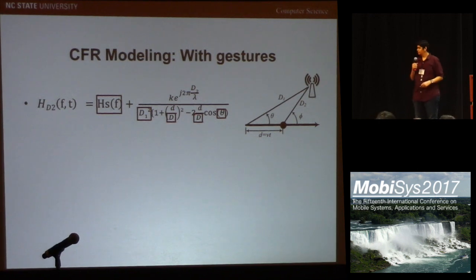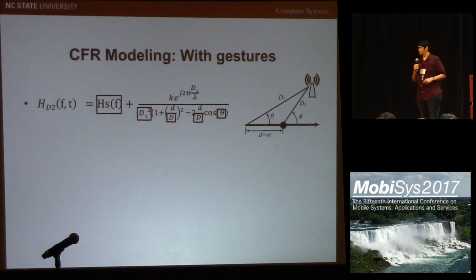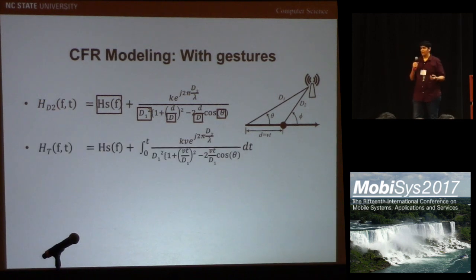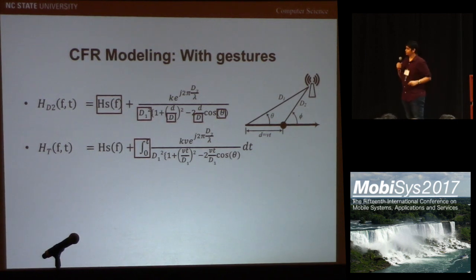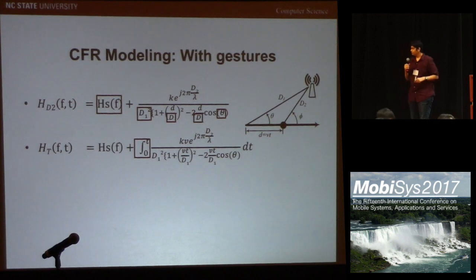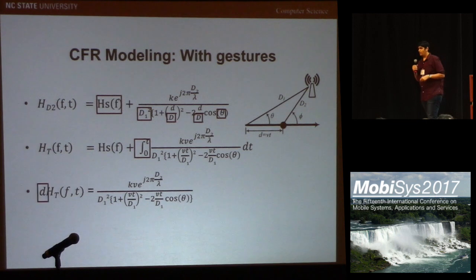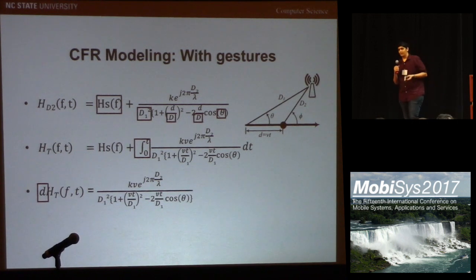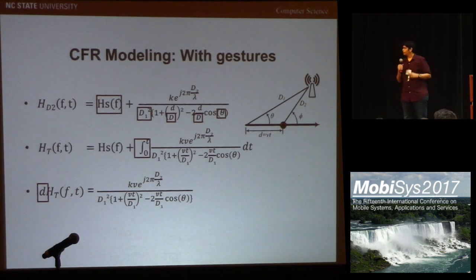We have expressed the equation only in terms of parameters D1 and D2. When we perform a gesture like raising the arm, we are actually exposing our arm as a distributed reflector, so we integrate over the arm and get the full CFR expression. This equation represents the CFR seen at any point in time. But what we need is the effect of the gesture on the CFR. In order to get that, we differentiate the signal. This differentiation is key because the static component, being a constant, gets eliminated when we differentiate with respect to time. This helps us detect the disturbance and move forward with the recognition process.